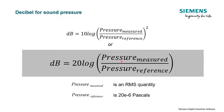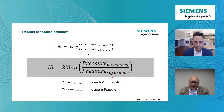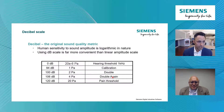We're making a measured pressure, we divide that by a reference pressure, take the log of that ratio, multiply by 20, and that's our decibel. It's important to understand the pressure we're measuring is an RMS quantity — not a peak or peak-to-peak value, it's an RMS. The reference pressure we use in all of acoustics is 20 micropascals, or 20 × 10⁻⁶ pascals.